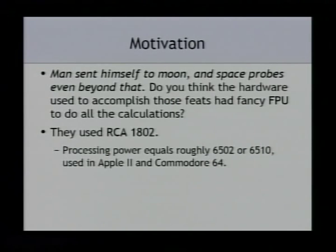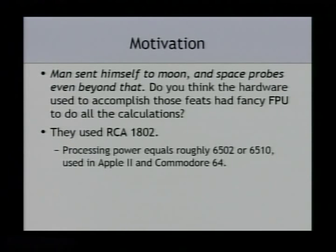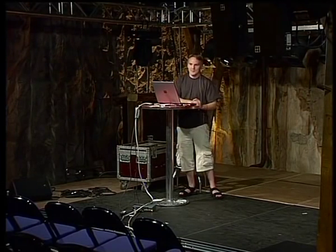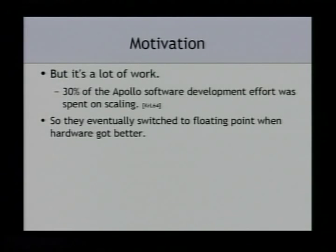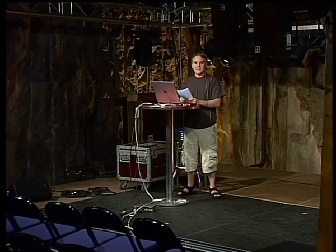Man visited space and sent probes to Jupiter and beyond, and this happened already tens of years ago, so the hardware wasn't very fancy. For the Galileo mission they used the processor RCA 1802, which is roughly equivalent to a Commodore 64. For example, for the Apollo software development effort, 30% of the software was spent just on scaling and keeping things in the right scale to calculate the math properly.